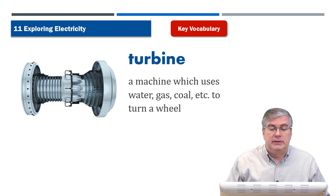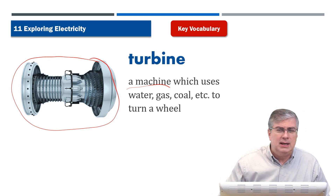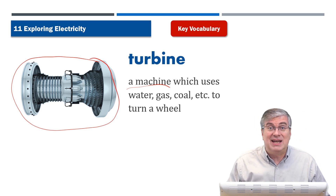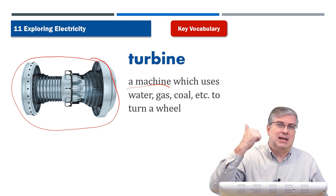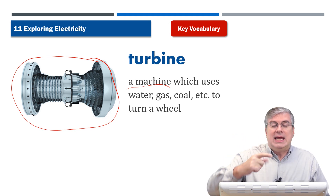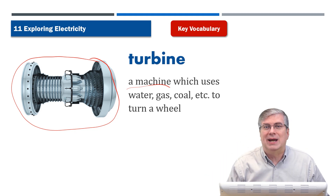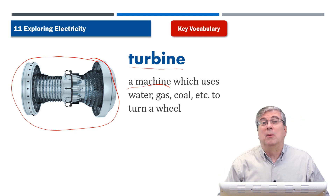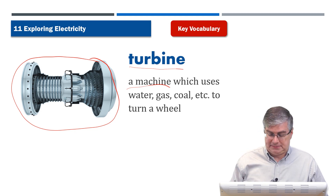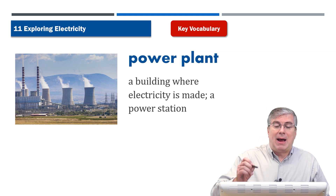Next we have 'turbine.' Look at this machine — it's really big and looks very complicated, like something from a science fiction movie. But a turbine is just a machine. It uses water, gas, or coal to turn a wheel, and as we'll see in the reading, when you turn that wheel you can generate electricity. A turbine is very important for making electricity.